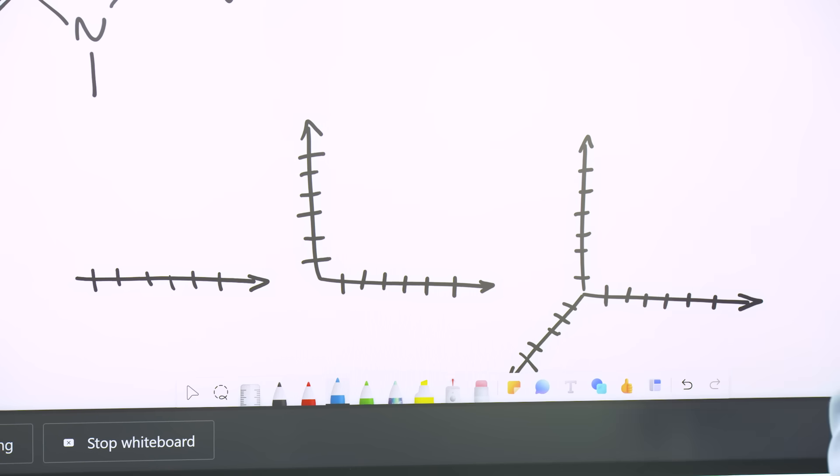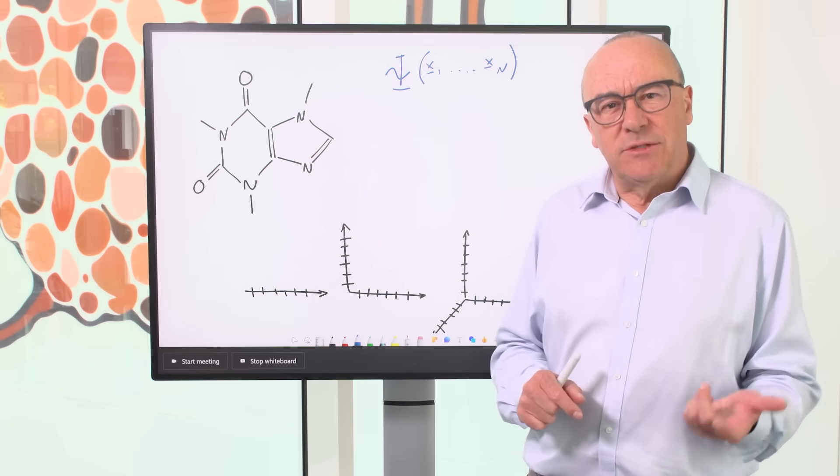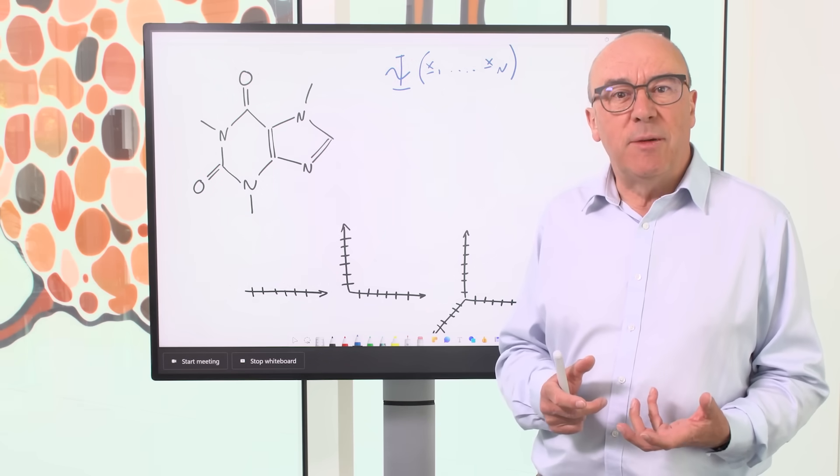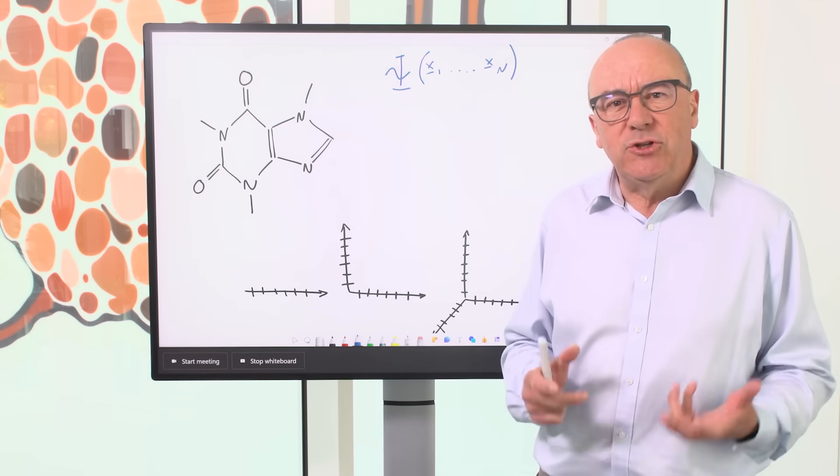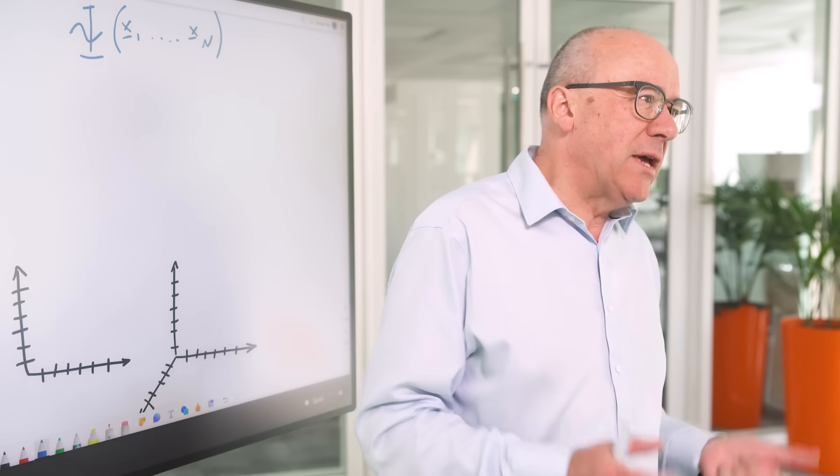By the time we get to three dimensions, it's a thousand times a thousand times a thousand. That's a billion grid points, and it's starting to get pretty large. And you can see this is growing very rapidly with the dimensionality of the space. We call this exponential growth.